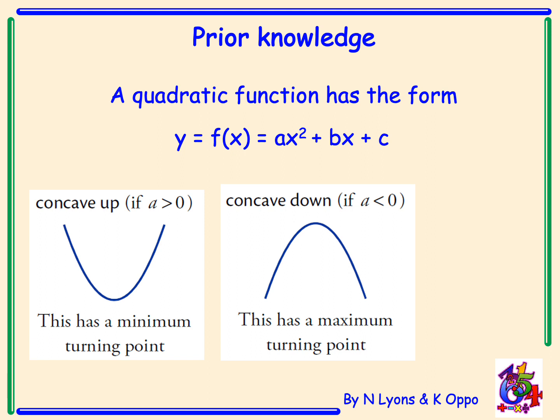Or if a, the number before x squared, is negative, it's a number less than zero, then our function will be concave down, or a sad curve. And this has a maximum turning point.